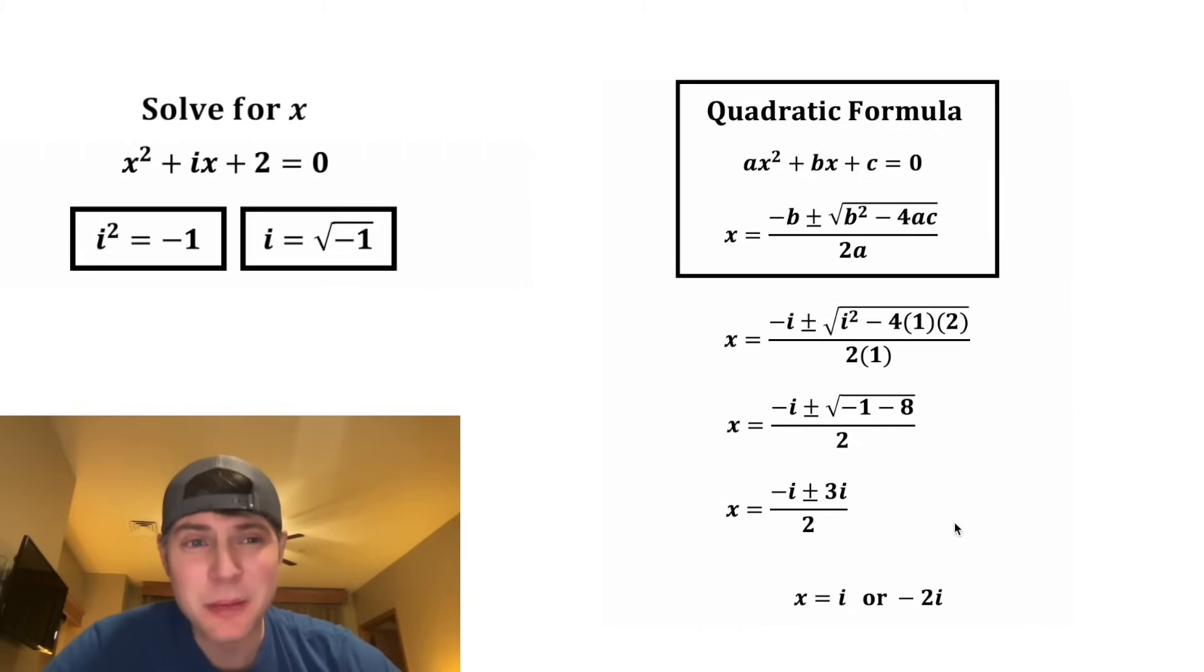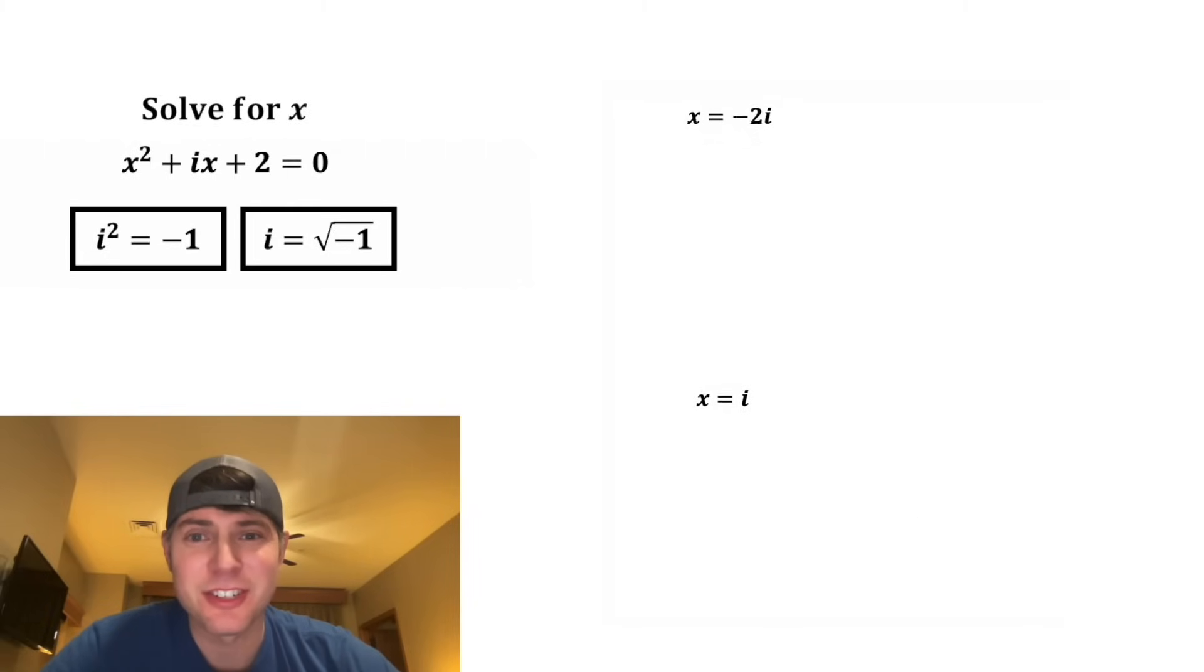So the quadratic formula did seem to work, but let's check our answers. Let's copy down the original equation. And in the place of both of these x's, we want to plug in negative 2i. For the first term, negative 2i squared, the squared is going to go both to the negative 2 and to the i.